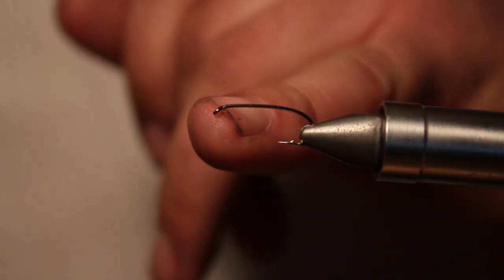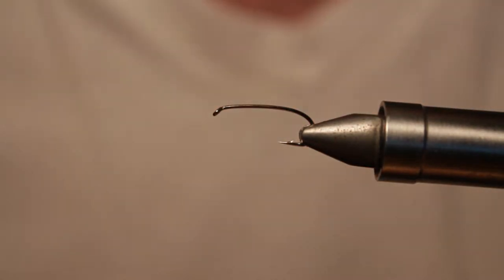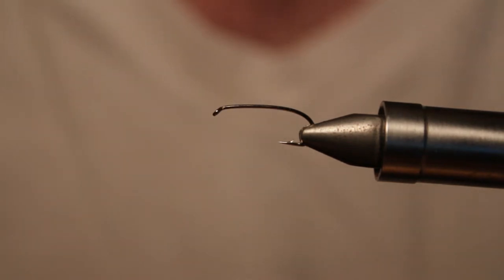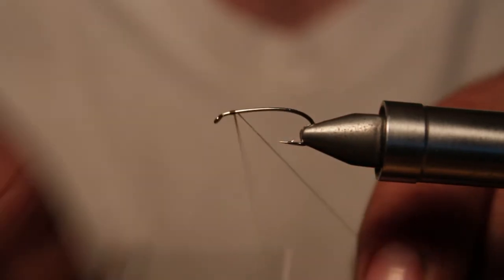What we're doing today is we've got a size 12 Daiichi number 280. It's a hopper hook, two times long, so whatever your preference on hook is, you can use that. What we're going to start with as far as thread is a UTC 70 in brown olive. Go ahead and get your thread started.